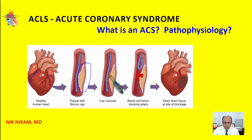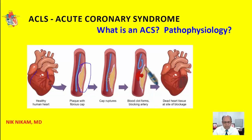When there is a thin cap on the plaque, it can sometimes rupture and cause a blood clot. Generally 90 to 95 percent of the blockage is caused by a hard plaque, and the last 5 to 10 percent is caused by a blood clot. These two mechanisms help us better understand what happens during an acute coronary syndrome.